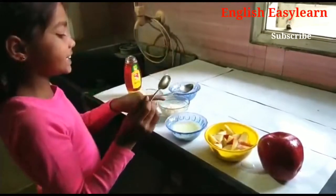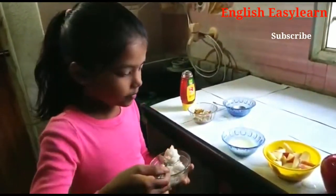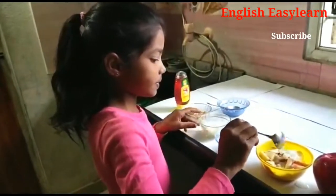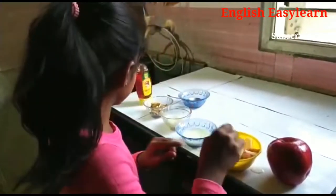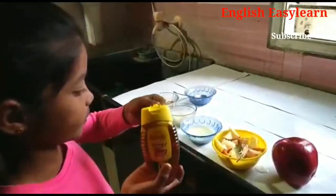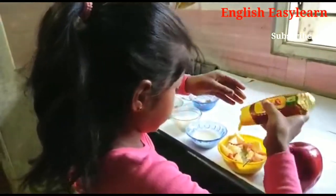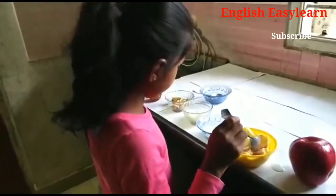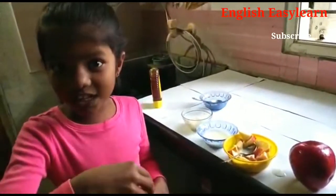Take sugar and put two tablespoons of sugar. Then take honey and add it. Then take a few dry fruits and sprinkle on it.